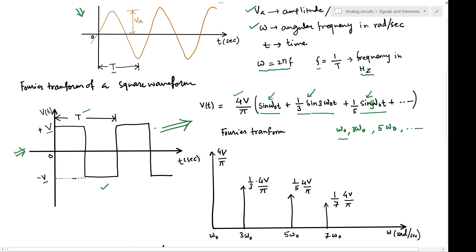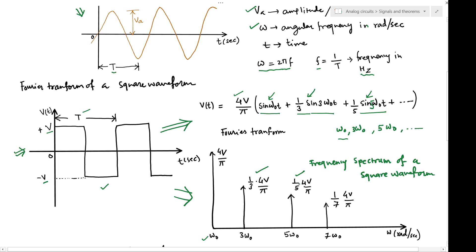Since this square wave is periodically varying, we can apply the Fourier transform to represent it in terms of a frequency spectrum. In the frequency spectrum of the square wave, at frequency ω₀ it has a component of 4V/π volts, at 3ω₀ it has a component of (1/3)×(4V/π), at 5ω₀ it has the next component, and at 7ω₀ it has a further component.